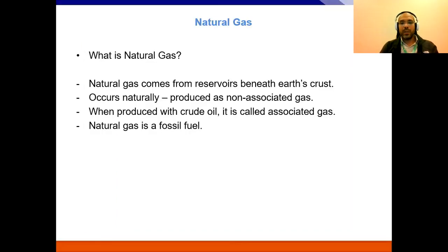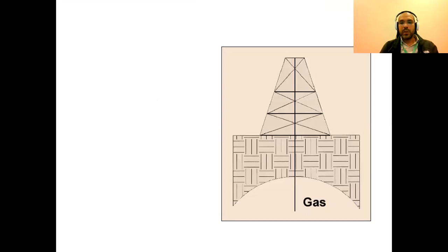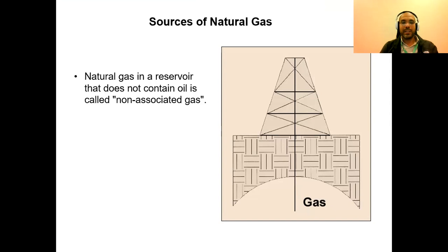So, what is natural gas? Natural gas actually comes from the reservoir — the oil and gas traps beneath the earth's crust. It naturally occurs and can be produced as non-associated gas. When produced with crude oil, it is also called associated gas. Natural gas is mainly a fossil fuel. Non-associated gas is the natural gas in a reservoir that does not contain any oil or condensate. Non-associated gas will typically contain some concentration of heavier hydrocarbons and a higher concentration of CO2 and nitrogen.